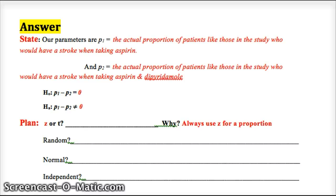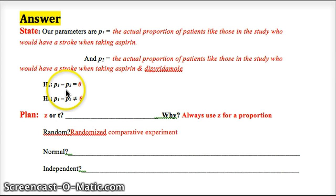Let's look at the random condition. We're told it's a randomized comparative experiment, so that means we should have an unbiased estimator. P hat one minus p hat two should be a legit sampling distribution. We should have an unbiased estimator of the true parameter.